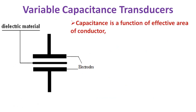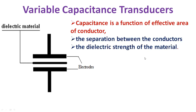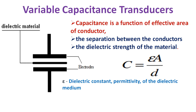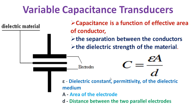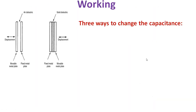Coming to variable capacitance transducers, they work on the principle of displacement measurement in various ways. Capacitance is a function of effective area of conductor, the separation between the conductors, and the dielectric strength of the materials, described by the equation C = εA/D, where ε is the dielectric constant — the permittivity of the dielectric medium — A is the area of the electrode, and D is the distance between the two parallel electrodes. There are three ways to change the capacitance: changing the area between the two plates, changing the distance between the two plates, and changing the solid dielectric constant between the electrodes, which changes the permittivity.